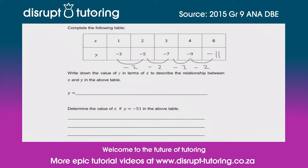They've asked us to write down the value of y in terms of x to describe the relationship between x and y in the above table. This question is very similar to a number patterns question where they ask you to provide the general term or the nth term. We're essentially trying to find a relationship so that we can find what any y is given x.